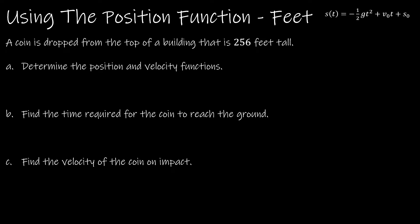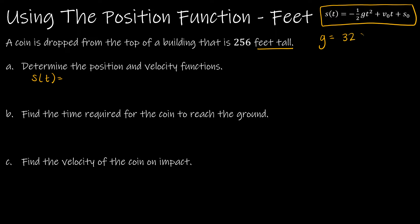For our first example, we're going to work together through all the types of questions you'll typically get for a position function. A coin is dropped from the top of a building that is 256 feet tall. I have the position function here in case you don't have it memorized yet. For s of t, notice this is given in feet, therefore g must be 32 feet per second squared.